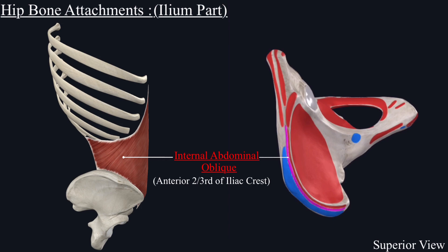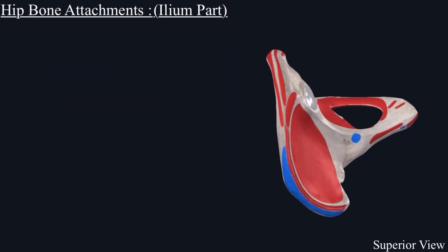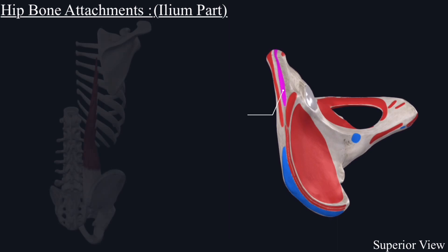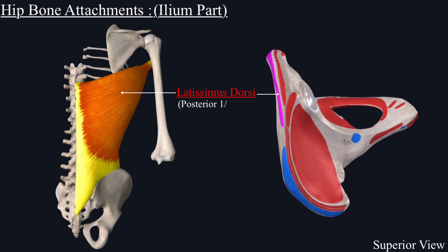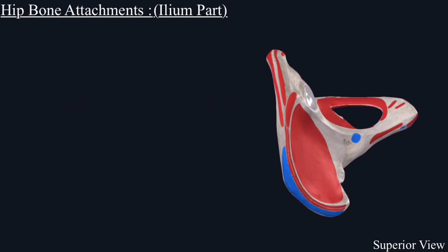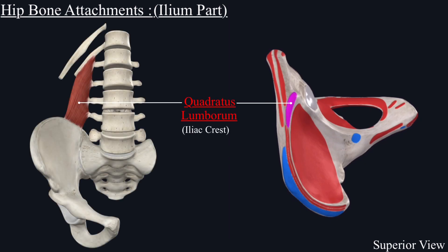From the posterior one-third of the iliac crest originate the iliocostalis lumborum muscle and latissimus dorsi muscle. Also, from the iliac crest originates the quadratus lumborum muscle.